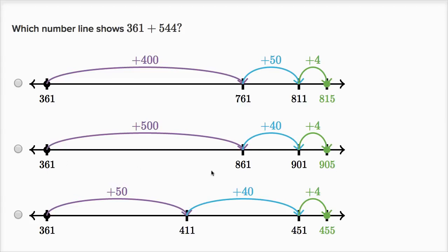This makes sense. You add 500, you get 861. You add 40, you get to 901, and then you add the four, you get to 905. So definitely go with that choice.